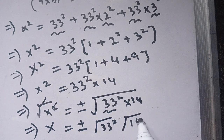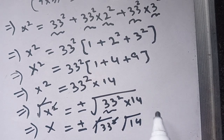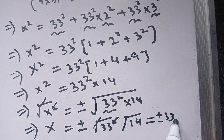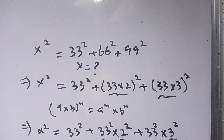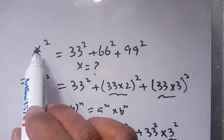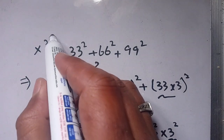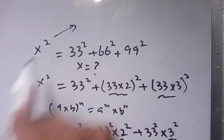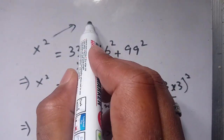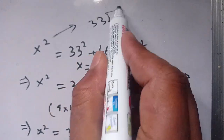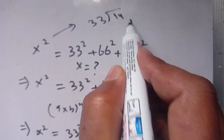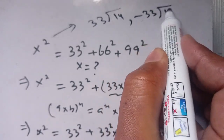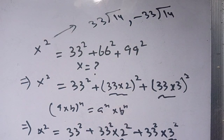We can cancel out the square by the square root, giving us plus or minus 33 times the square root of 14. Since it is a squared equation, x squared has two roots: one root is 33 times the square root of 14, and the second root is minus 33 times the square root of 14.